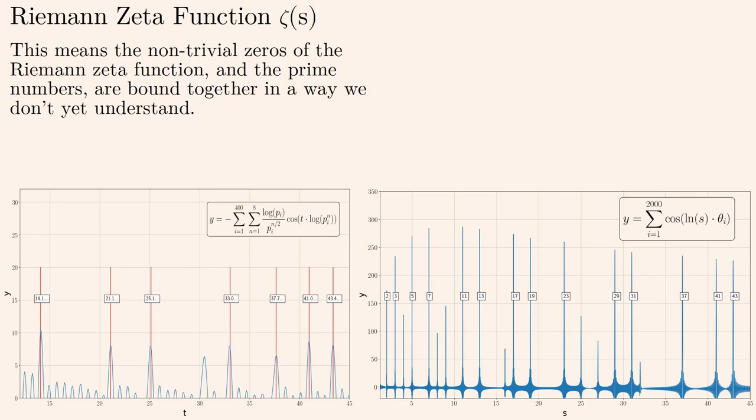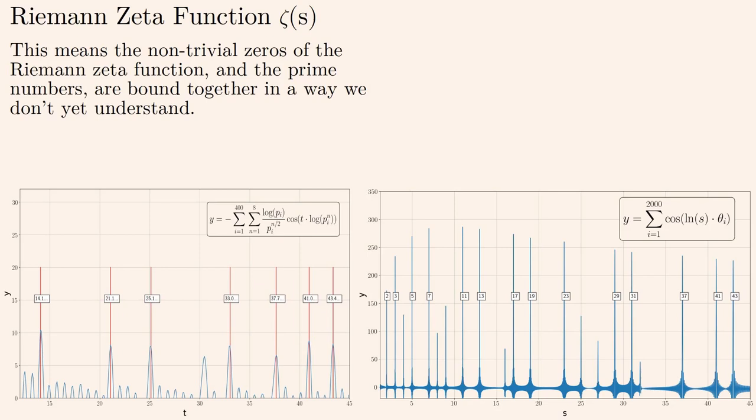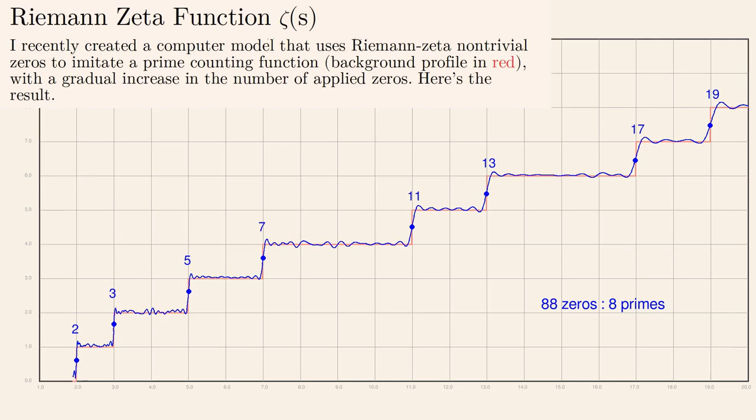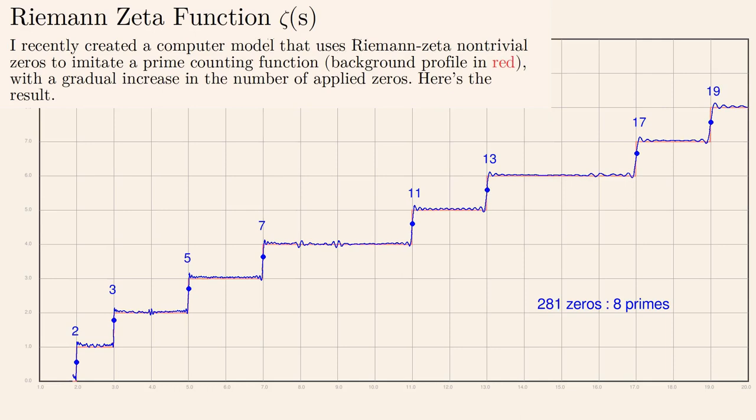I recently created a computer model that uses the Riemann zeta zeros to imitate a prime counting function. The red background trace is an ideal representation of the prime counting function, present for comparison with my model's results, which appear in blue. A range of Riemann zeros, from none to 300, is progressively applied to my model to show the effect this has on the result. My model automatically detects and labels the primes as they appear. In the second plot, a wider range of primes is plotted to see how robust my model is at locating and identifying primes on a larger scale.